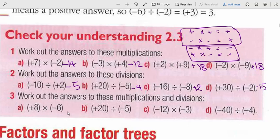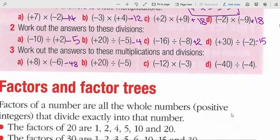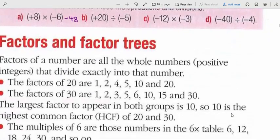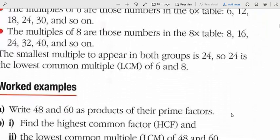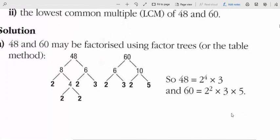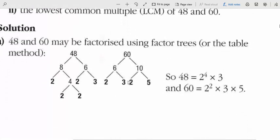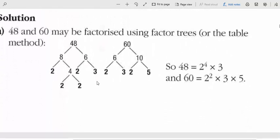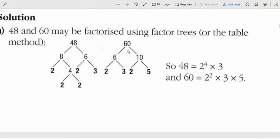8 times 6 is 48, so it's negative 48. The rest is your homework. This next section is called factor trees — as an explanation, 60 is equal to 6 times 10.